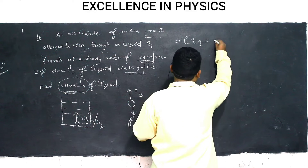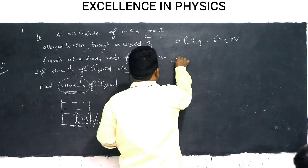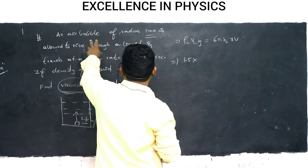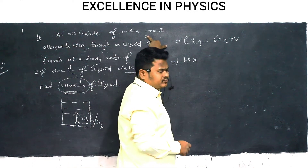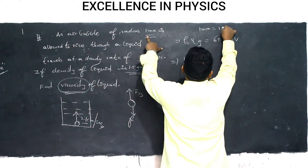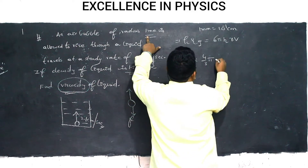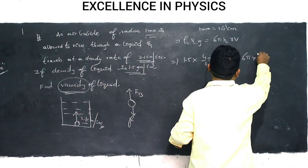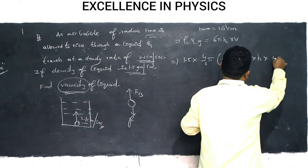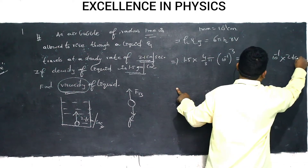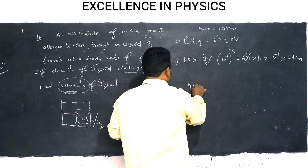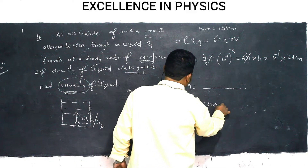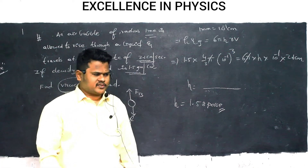Buoyancy = ρ_l × V × g = 6πηrv. Working in CGS: density = 1.5 g/cm³, radius = 1 mm = 10⁻¹ cm, volume = (4/3)π(10⁻¹)³ cm³, velocity = 2.1 cm/s. After canceling π terms and substituting all values, the coefficient of viscosity η comes out to be 1.58π poise, where poise is the CGS unit of viscosity.